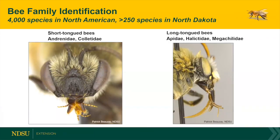There are a lot of different bees. We have a total of 4,000 species in North America, and I've seen estimates in North Dakota of anywhere from 250 to 300 different species of bees. There are about two different key groups. We can divide them into short-tongued bees — the andrenids and the colletids — and then the long-tongued bees: the Apidae, Halictidae, and the Megachylidae.